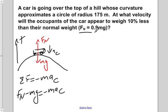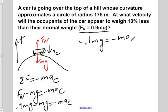But we're told that the normal force is equal to 0.9 mg. So if we plug that in for Fn, we'd have 0.9 mg minus mg is equal to negative ma centripetal. If we now subtract 0.9 mg minus mg, we would get negative 0.1 mg is equal to negative ma centripetal.